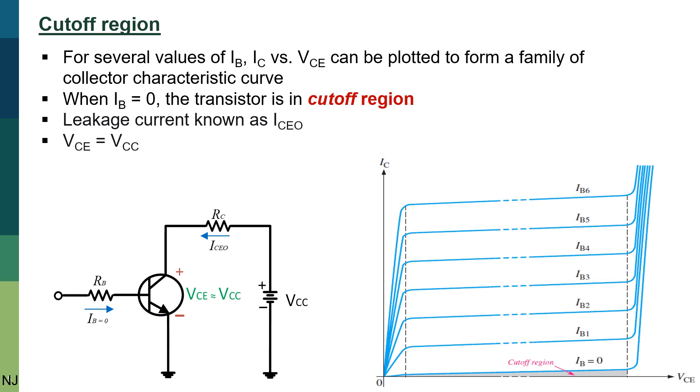As mentioned before, for several values of base current IB, the collector current IC versus VCE can be plotted to form a family of collector characteristic curves. We already discussed saturation region, active region, and breakdown region.